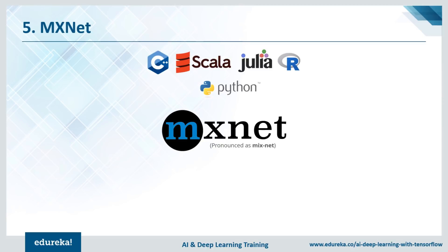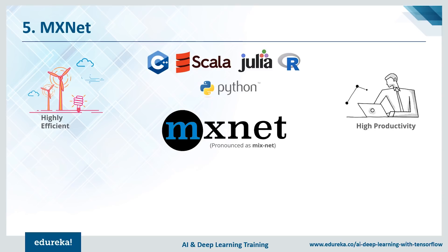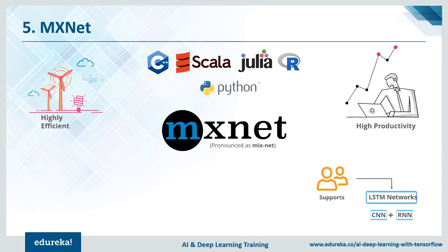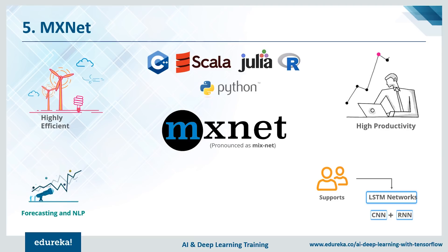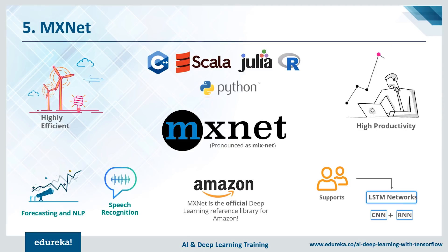MXNet was specifically designed for high efficiency, high productivity, and a lot of flexibility. MXNet supports long short-term memory, also called LSTM, along with support for both recurrent neural nets and convolutional neural nets. It's known for its capabilities in imaging, speech recognition, forecasting, and natural language processing. Lastly, Amazon employed MXNet as its go-to reference library for the majority of its deep learning requirements.